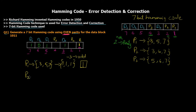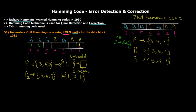For P2, we check positions 3, 6, and 7. The values are 1, 0, and 1. The number of ones is two, which is even. So we keep P2 as 0.